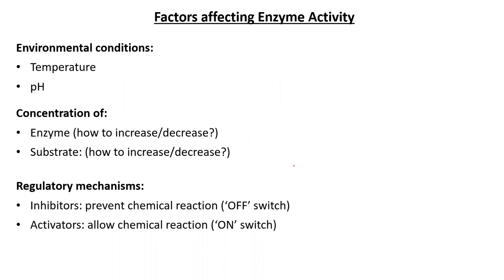The concentration of enzyme and substrate will also affect the rate of chemical reactions. And here it's interesting to think about: if a cell wanted to control the rate of its chemical reactions, would it be able to increase or decrease the concentration of its enzymes inside the cell? Would it be able to increase or decrease the concentration of substrate inside the cell, and if so, how would it do it?